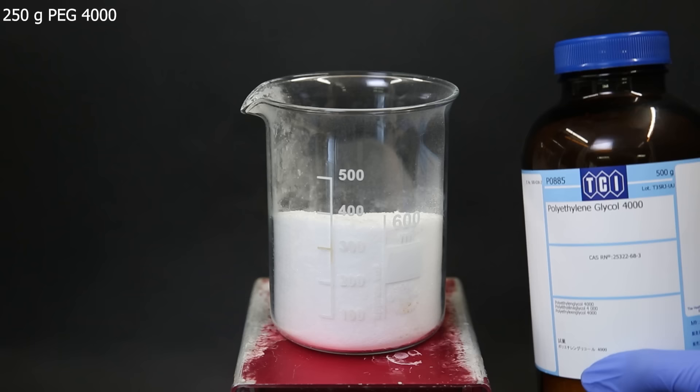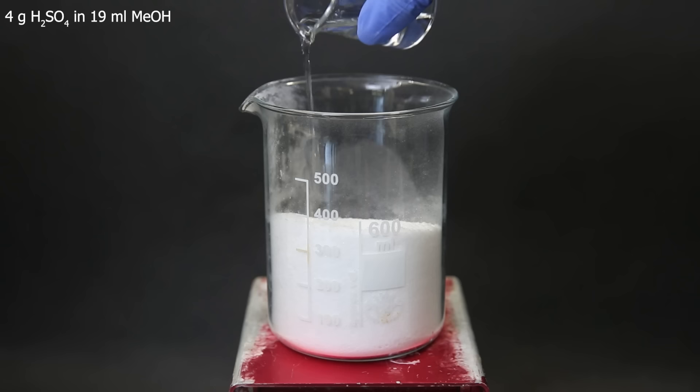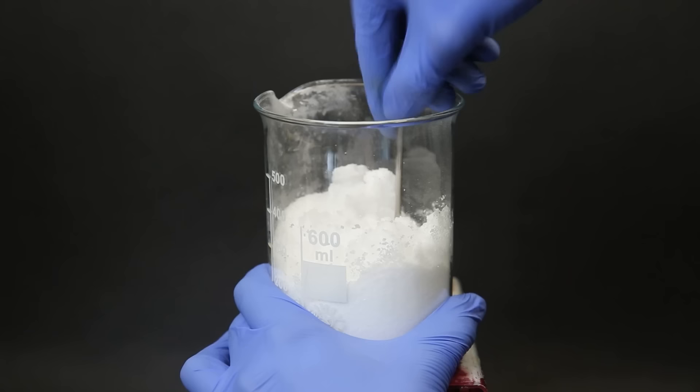To get started, I set up a beaker in which I have weighed out 250g of polyethylene glycol 4000. To this beaker, I add in a mixture of 4g of sulfuric acid in 90ml of methanol. Now I mix it and try to spread it around as evenly as possible.